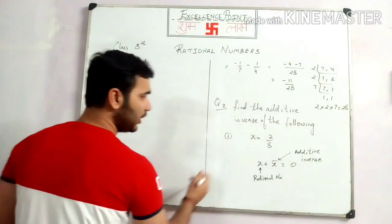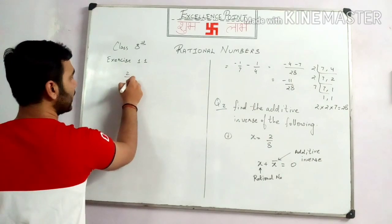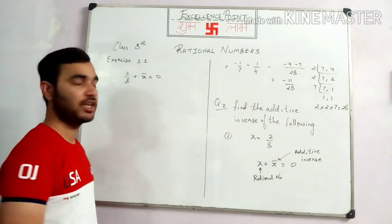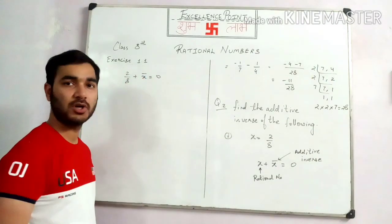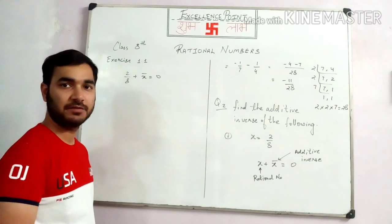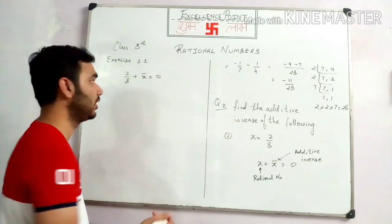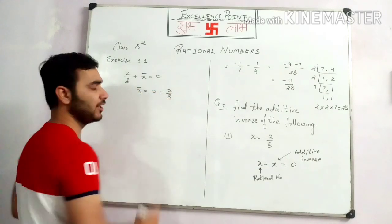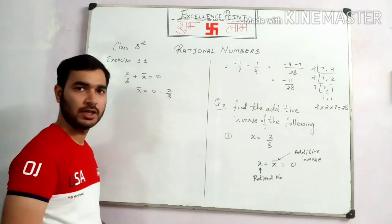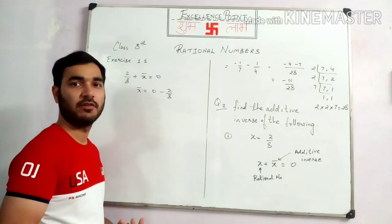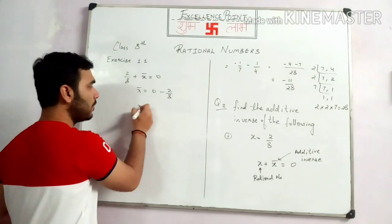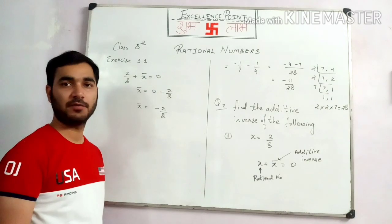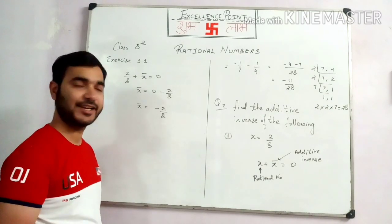So students, put the value of x over here: 2 by 8 plus x̄ will give you 0. We know that if we are getting a positive rational number and when we change the side, it will become a negative rational number. So x̄ is equal to 0 minus 2 by 8. The value of 0 is nothing, so x̄ will give you minus 2 by 8.